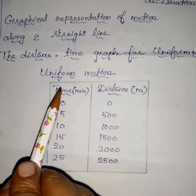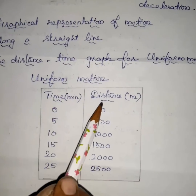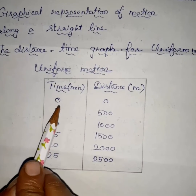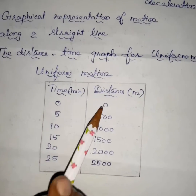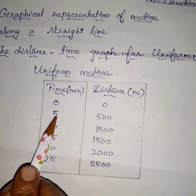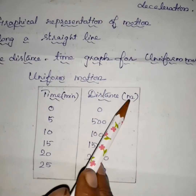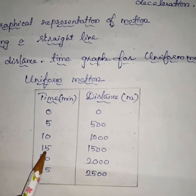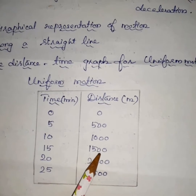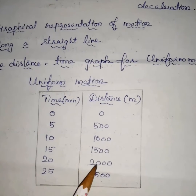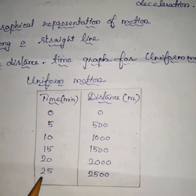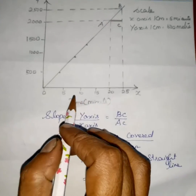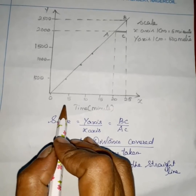Consider a person walking at different times. Initially the person is at rest, so at time zero the distance is also zero. At five minutes he covered 500 meters; at 10 minutes, 1000 meters; at 15 minutes, 1500 meters; at 20 minutes, 2000 meters; and at 25 minutes, 2500 meters.